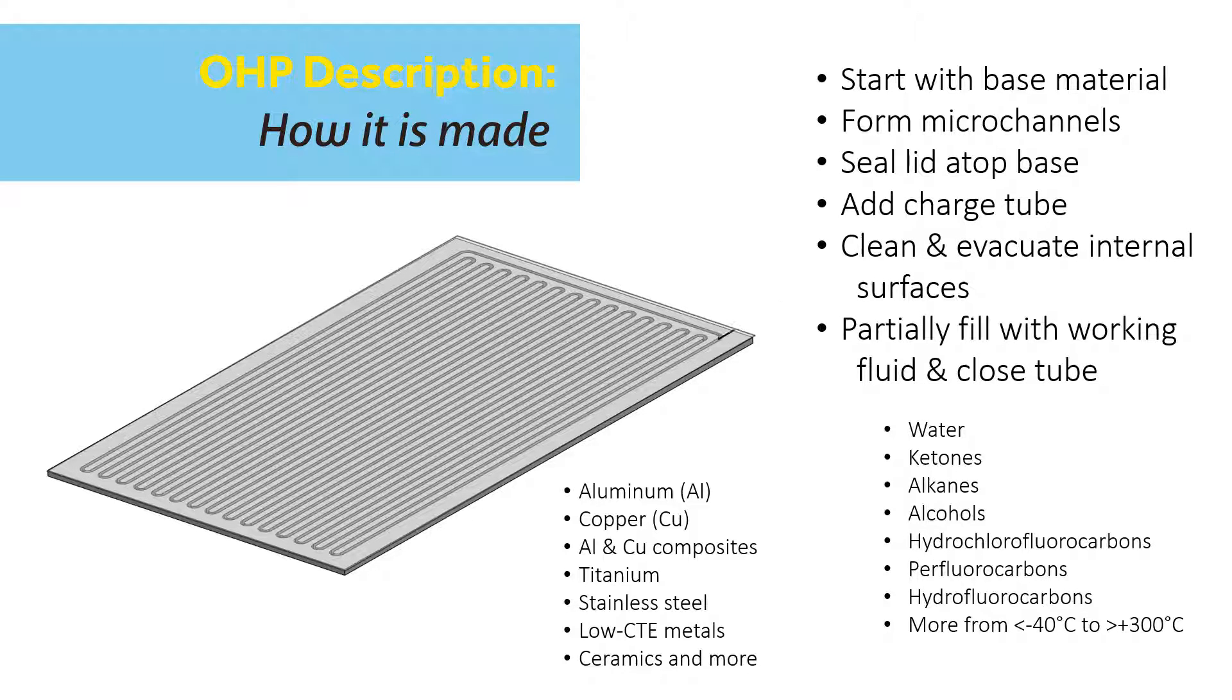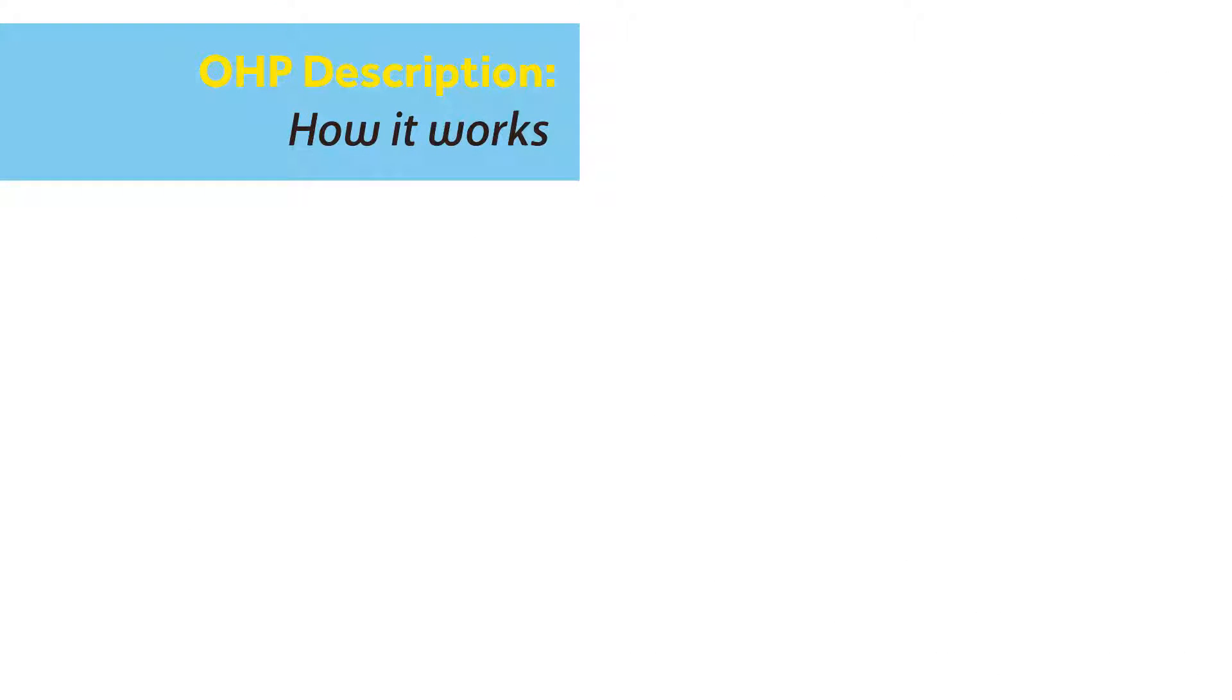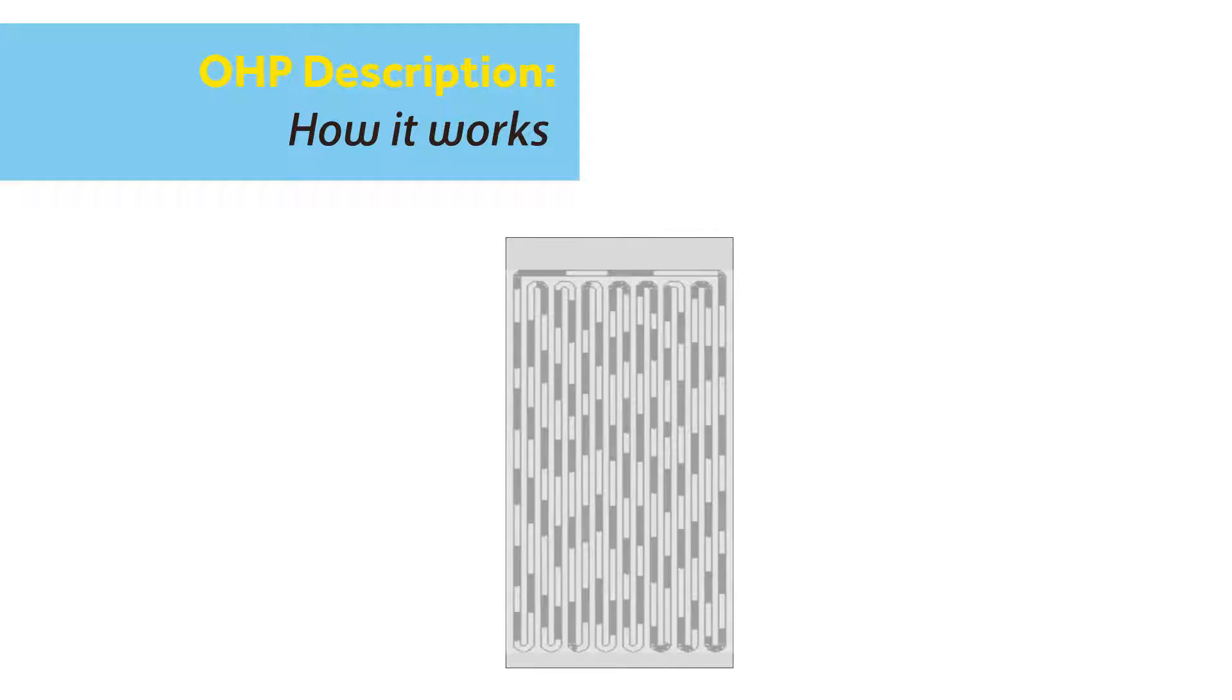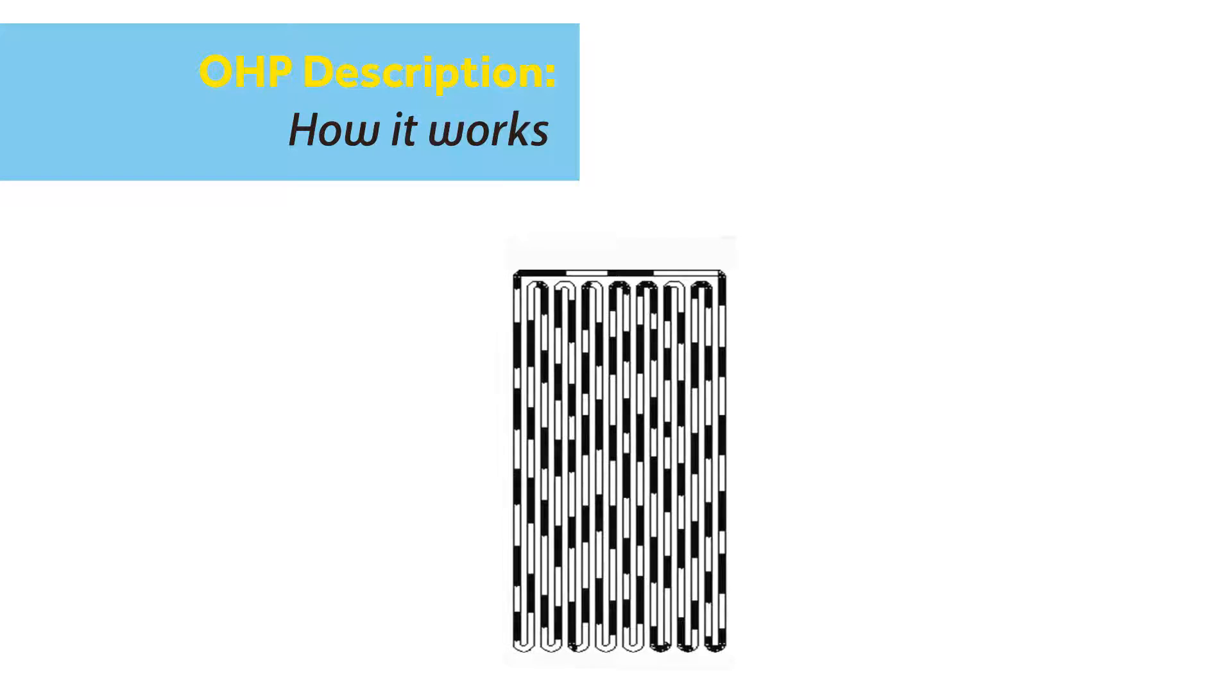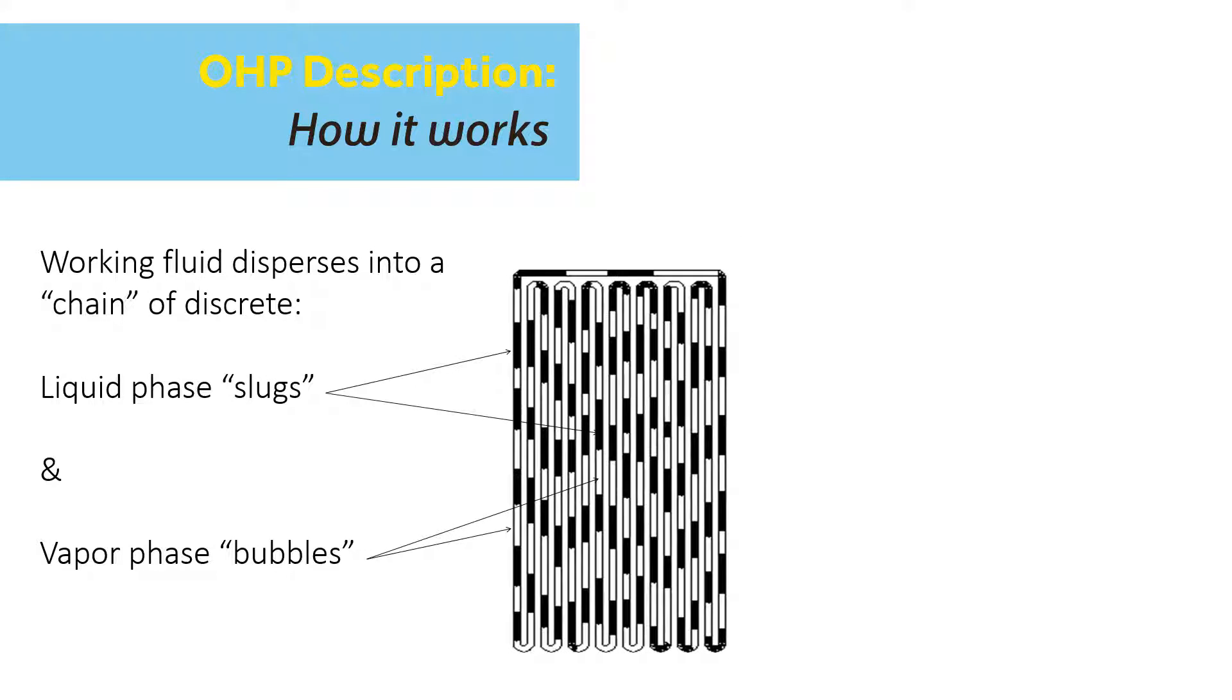Finally, we clean, evacuate, and partially fill the internal micro-channel with a working fluid. The working fluid's surface tension and wetting of the micro-channel walls cause it to disperse inside the OHP into a characteristic chain of liquid slugs and vapor bubbles.